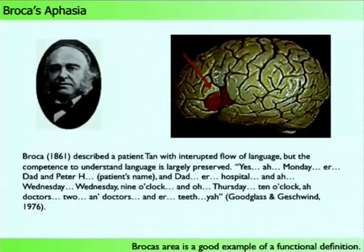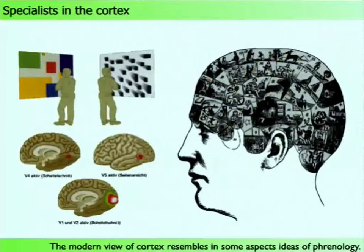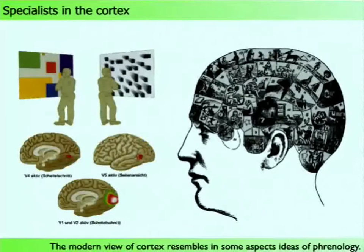Today, with modern imaging techniques, we have a host of different functional areas. For example, comparing Mondrian-like colored visual stimuli to gray-level equivalents reveals a small region on the ventral surface of the brain — the homolog to area V4 — which is more activated by colored stimuli. Similarly, comparing moving random-dot stimuli to static versions reveals a different area more activated by motion, again demonstrating functional specialization.